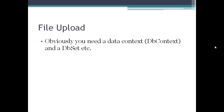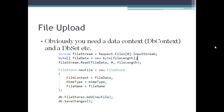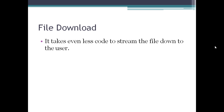With standard Entity Framework plumbing in place - a DbContext, DbSet, and so on - the rest of the upload code creates a new FileStore object, sets the Content to our byte array, sets the MIME type and file name, then adds it to the FileStores DbSet and calls SaveChanges. That's it - bada bing bada boom.